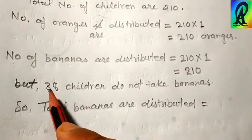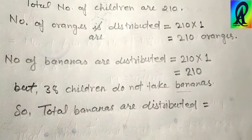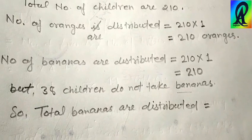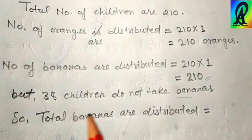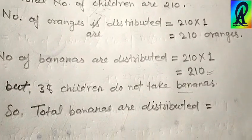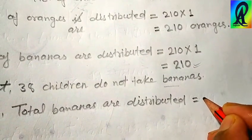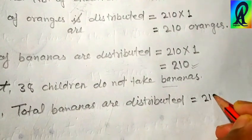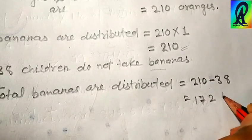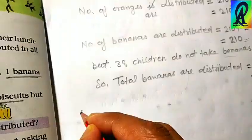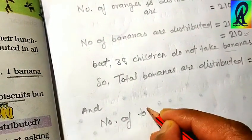38 children do not take bananas. If every child took a banana, total distributed bananas would equal 210. But 38 students do not take bananas, meaning 38 bananas are not distributed. So we subtract 38 from 210 and get 172 bananas distributed.